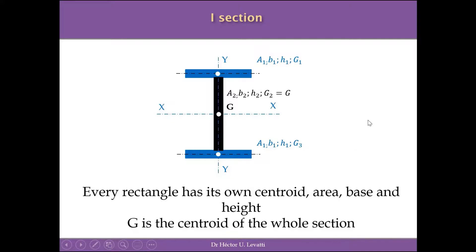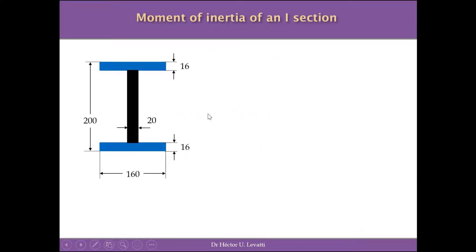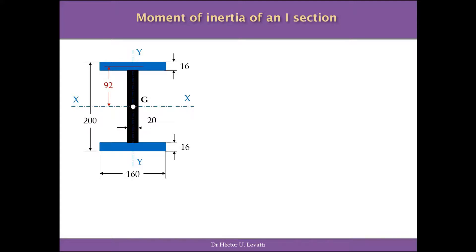To find the moment of inertia of the I-section, we evaluate the moment of inertia of each of the three rectangles. In this example, the flanges have a base of 160 mm and a height of 16 mm, while the web has a base of 20 mm and a height of 200 − 16 − 16 = 168 mm. A key distance is that from the centroid of the top flange to the barycentric axis X of the whole section, which is 92 mm.